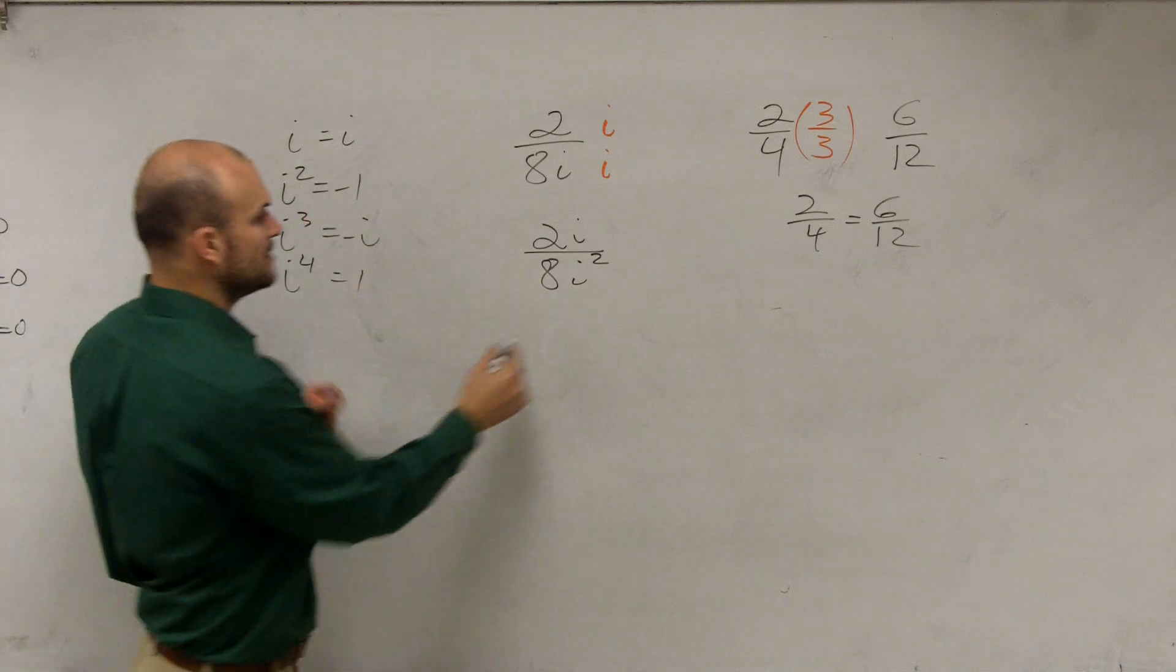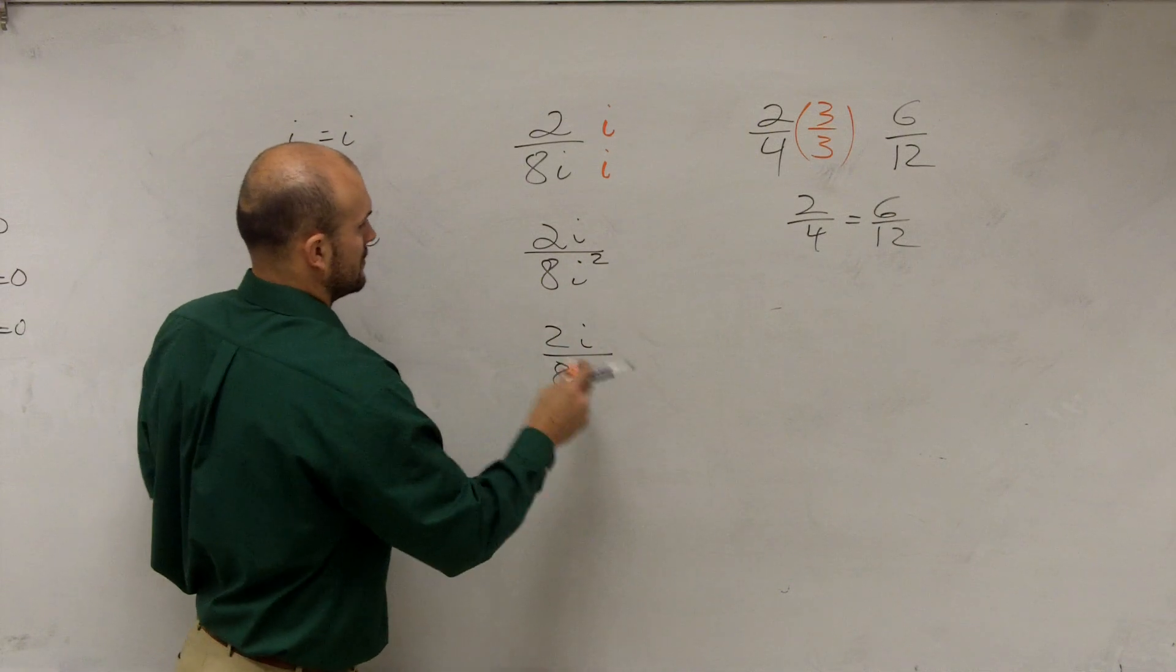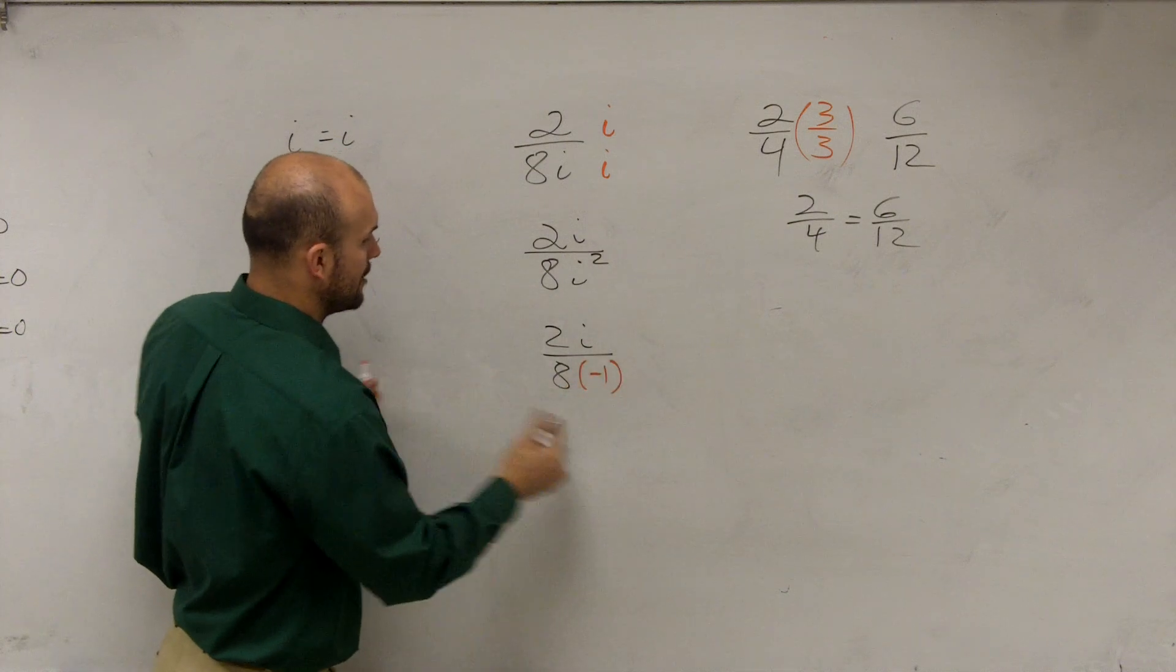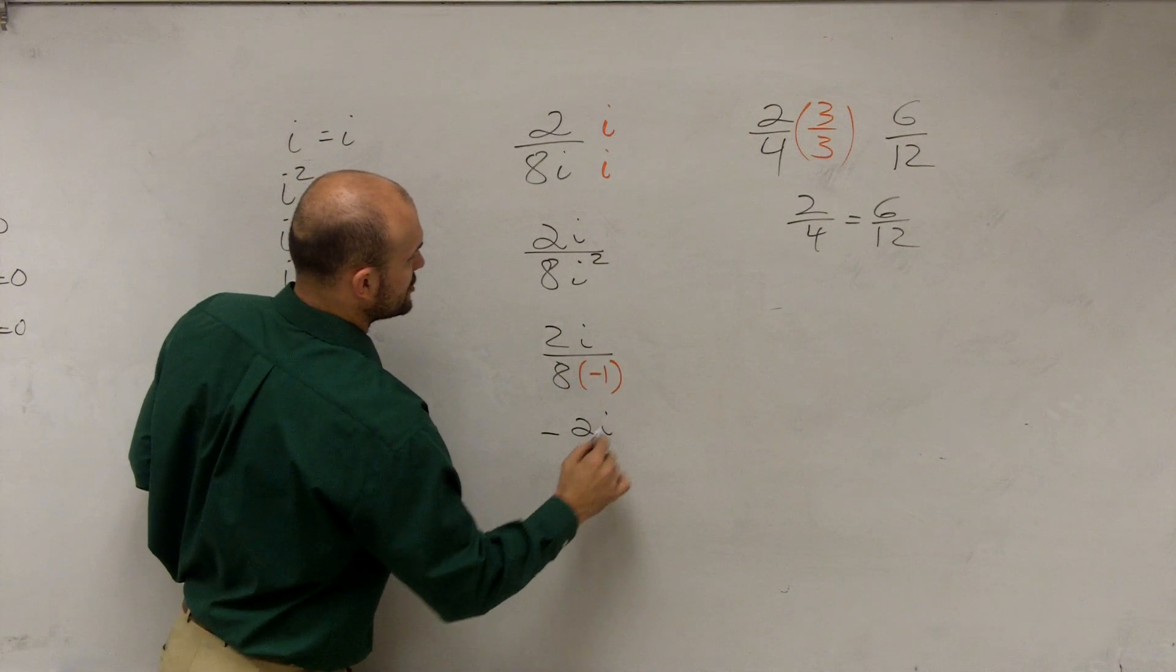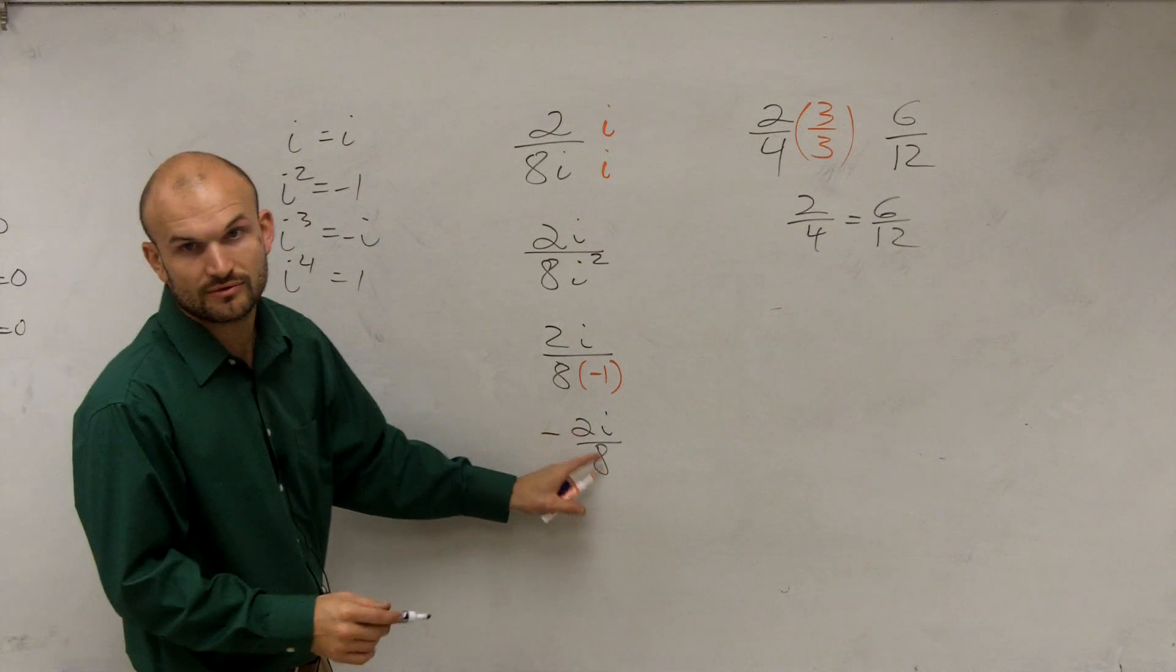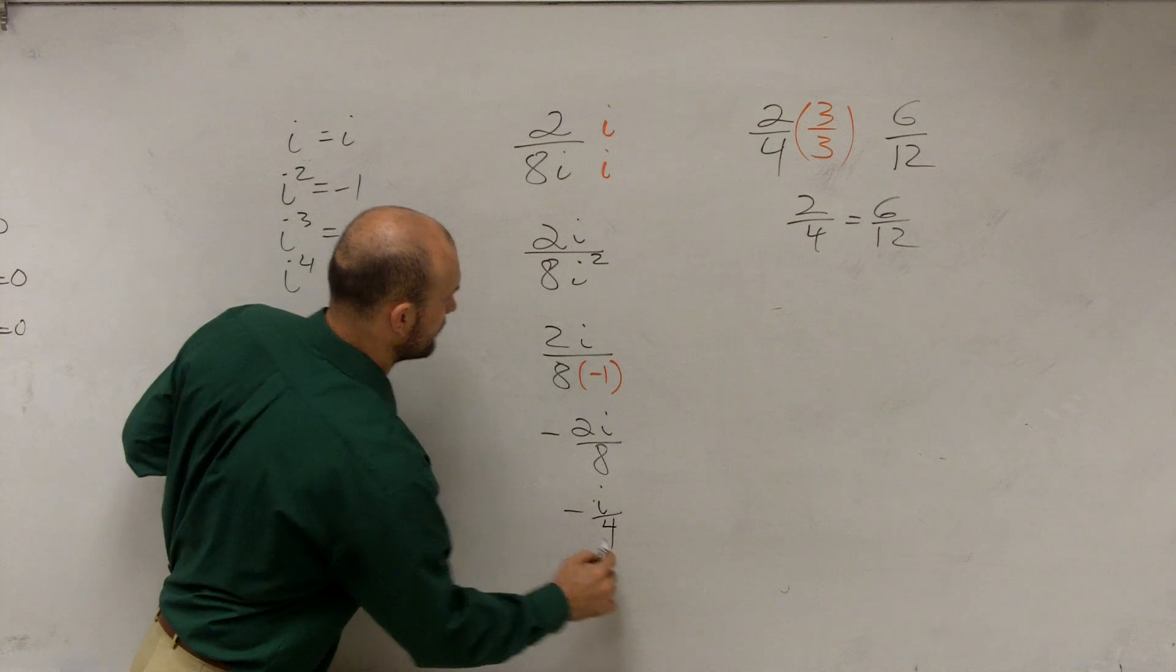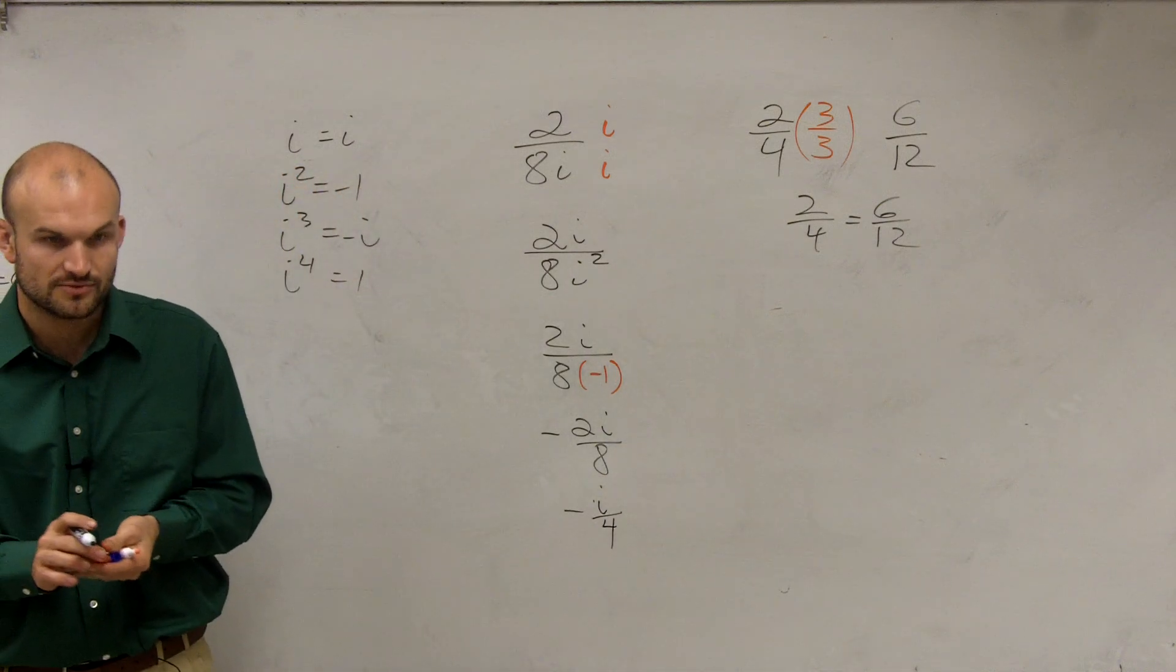So i squared equals negative 1. So you say 2i times 8 times negative 1 now produces negative 2i divided by 8, which now you can actually reduce that. 2 over 8 can be reduced to negative i over 4, right? 2 eighths is the same thing as 1 fourth.